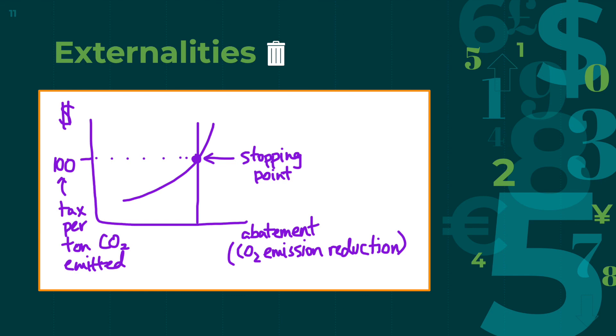They will reduce emissions up to the point where the cost of carbon dioxide emission reduction equals the amount the tax would cost them, and they will do it in the cheapest and most efficient way they can do it. And we can draw this phenomenon as shown.